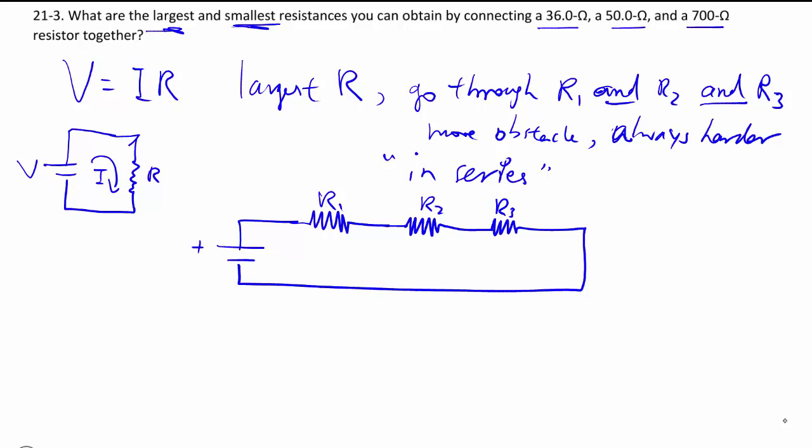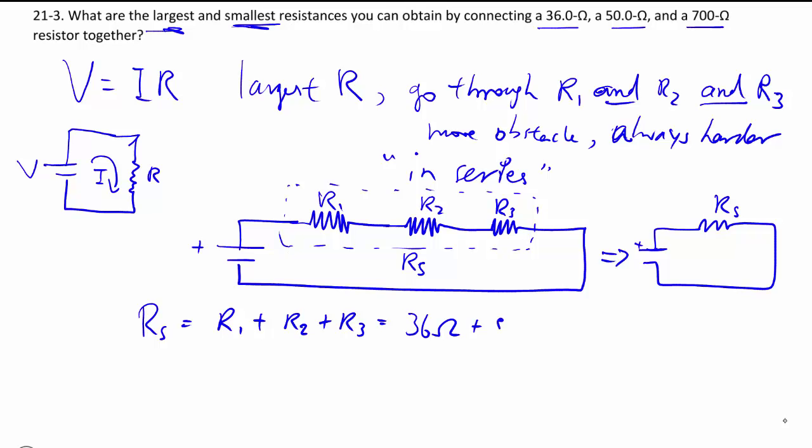In the case of series, where everything is in one line, we can actually combine this into a single equivalent resistance like that by simply adding them up. And that is the biggest possible resistance you can make.